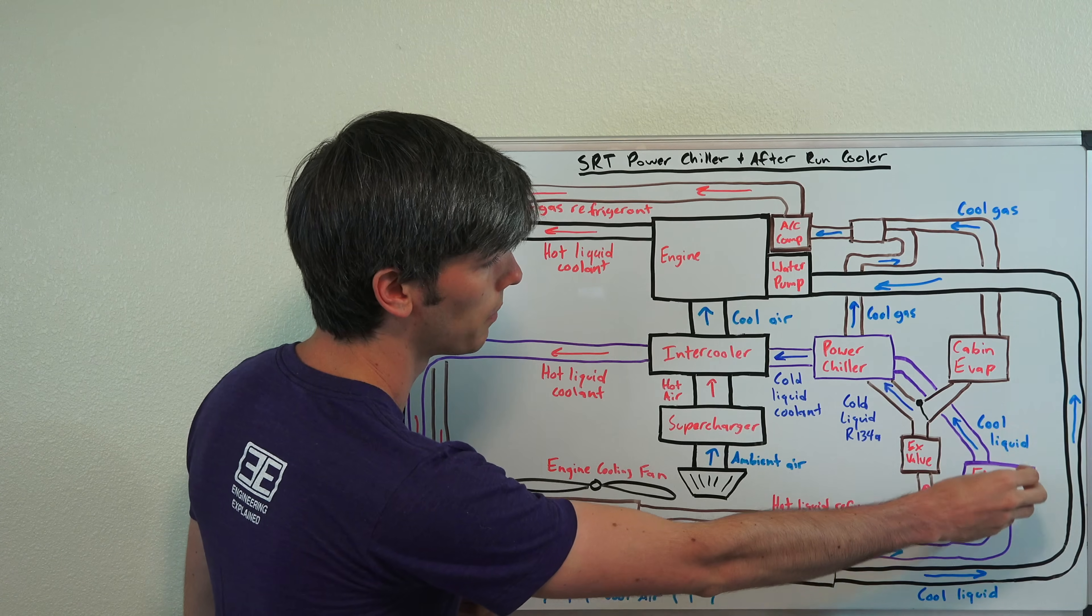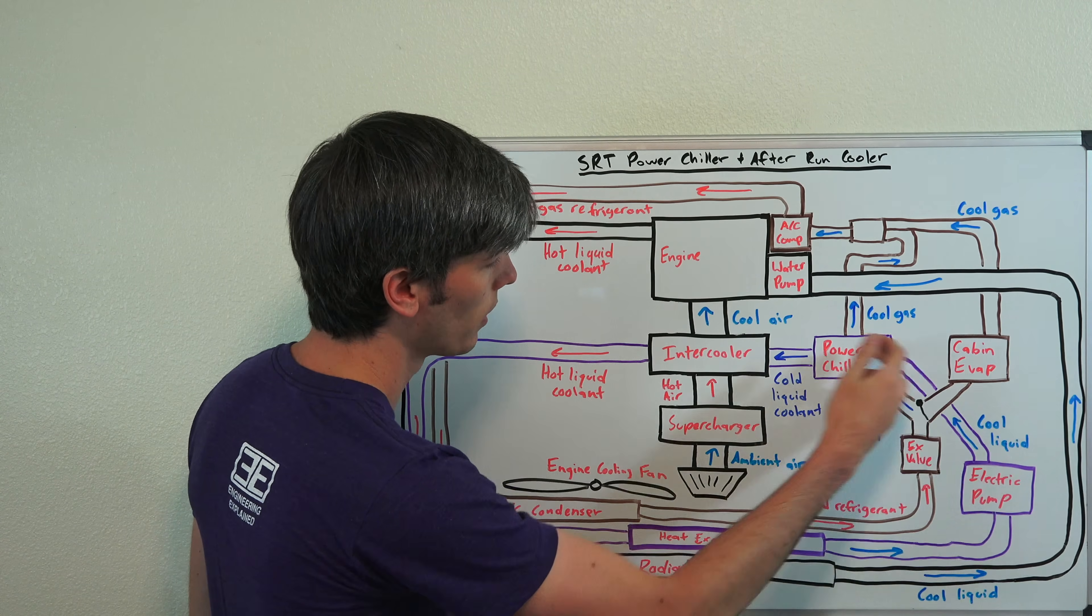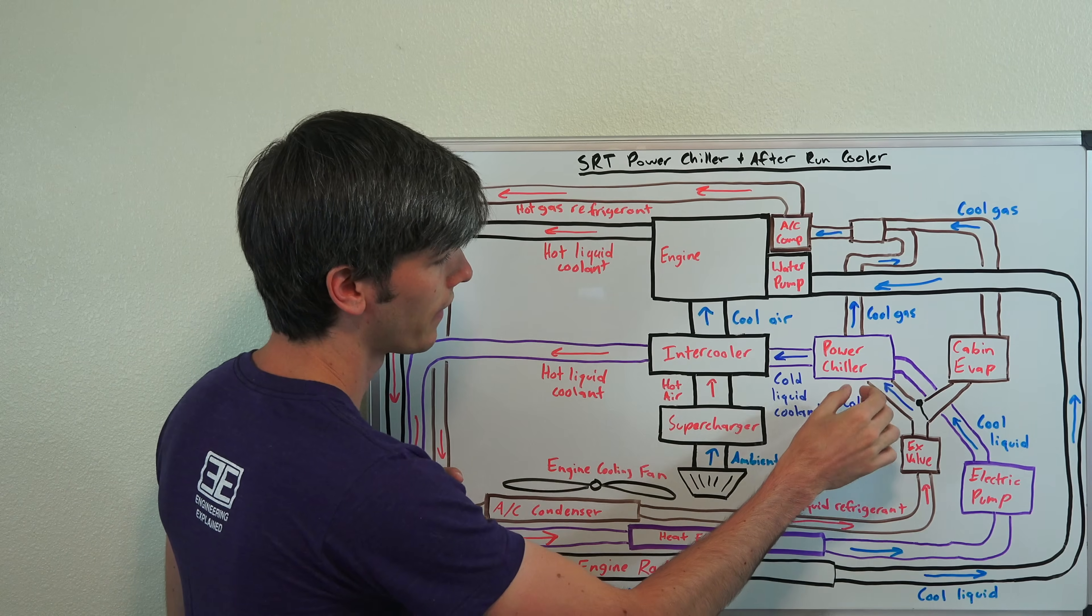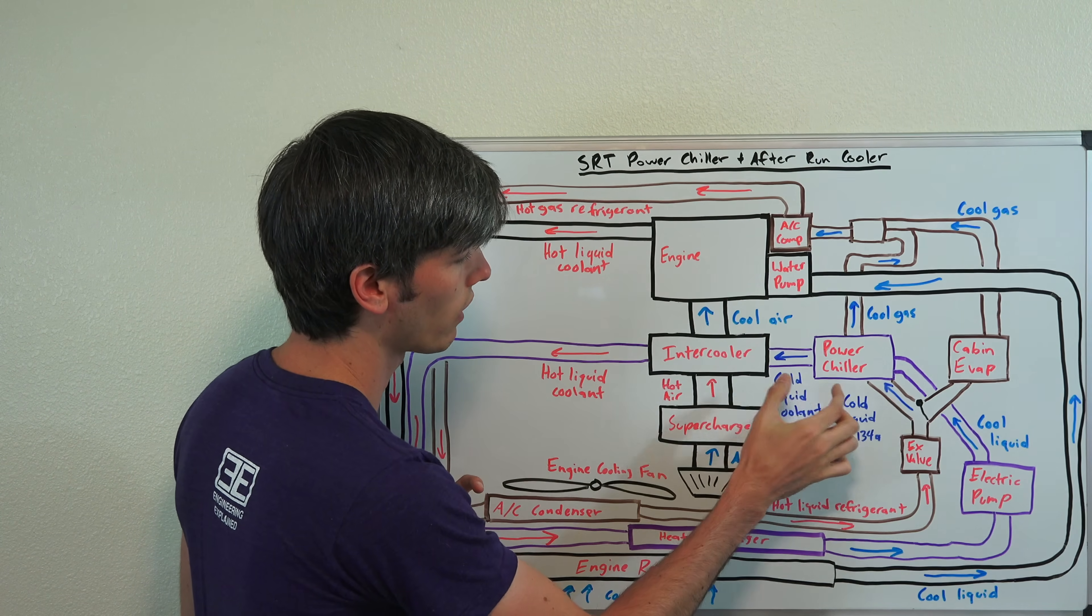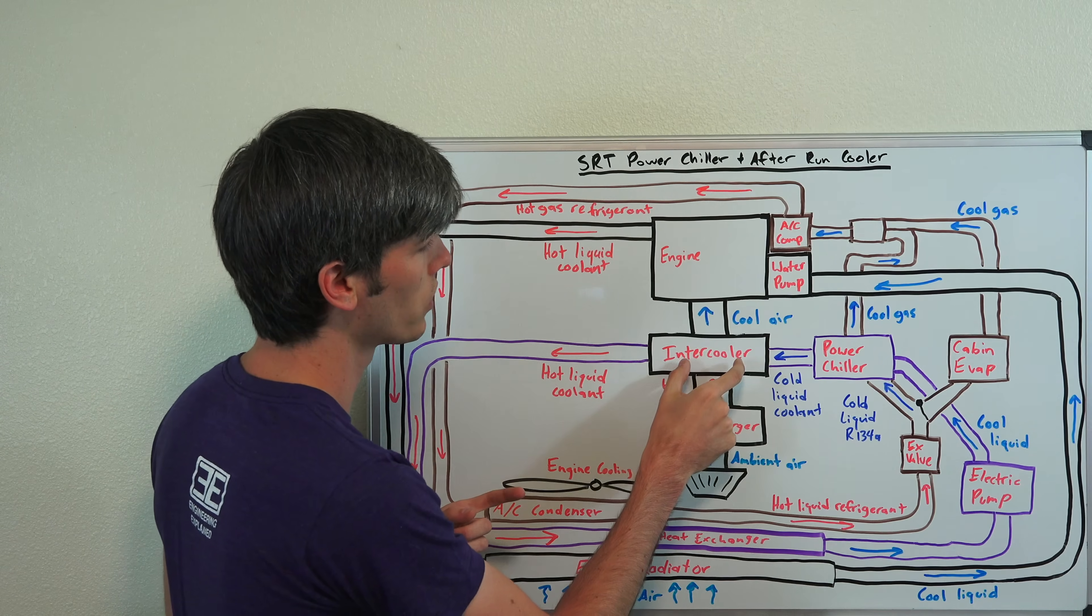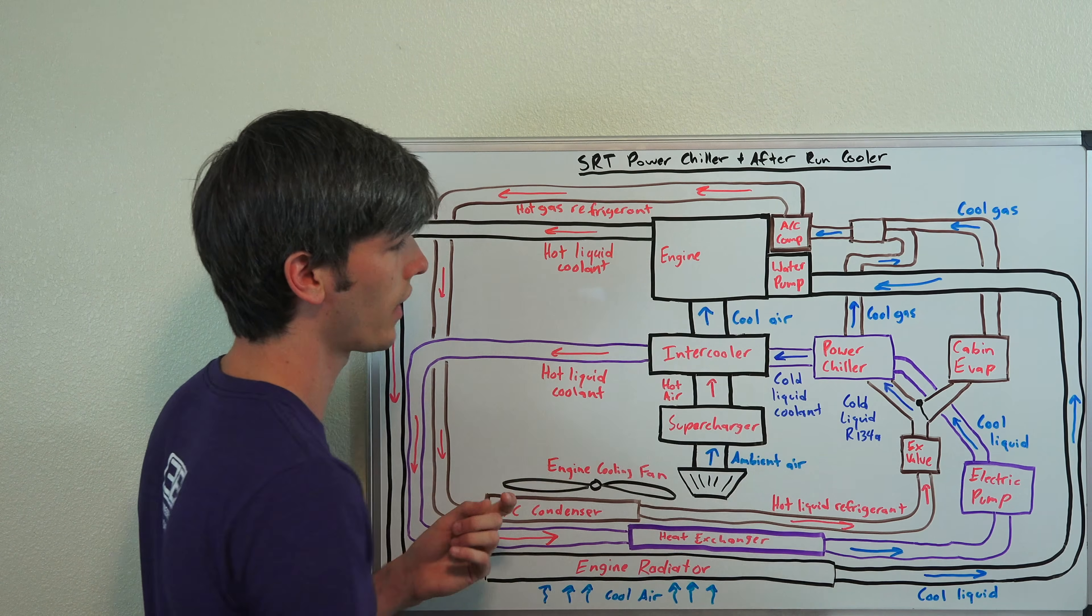And then you've got cool liquid coming from the electric pump for the intercooler circuit. And then as it goes through the power chiller, you use that AC coolant to actually have a cold liquid coolant travel into the intercooler to cool down this air. Now,